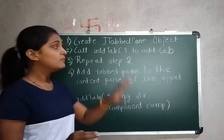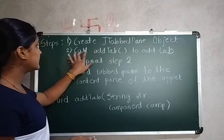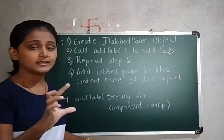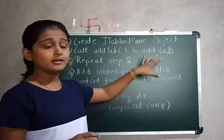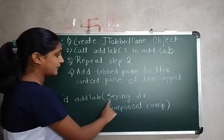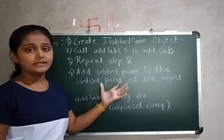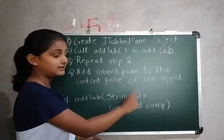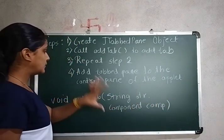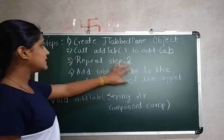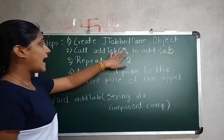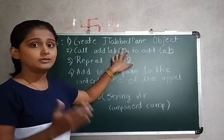For creating a JTabbedPane, first you have to create an object of JTabbedPane. The second step is to call the addTab method to add the tab. The method signature is addTab(String title, Component component), where you pass the title — like 'Color' or 'City' — and the component that will be added to that tab.